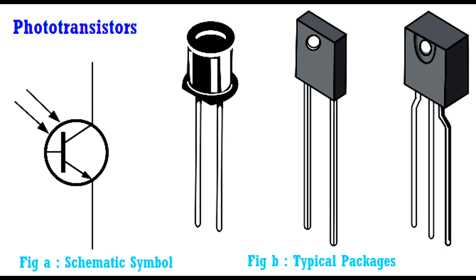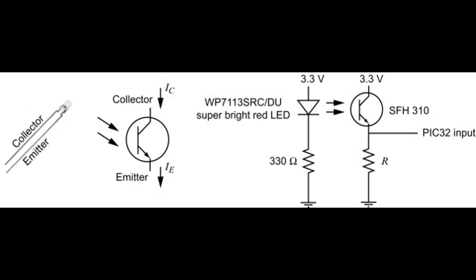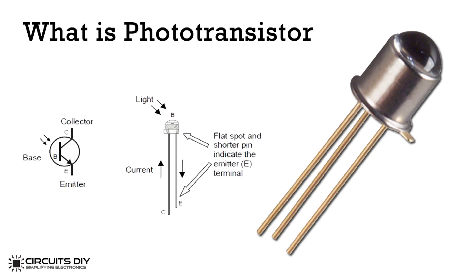Key points: The base region is exposed to light, which controls the phototransistor's operation. The small current generated by light in the base region is amplified by the transistor action, resulting in a larger current flow from the collector to the emitter. The packaging ensures the phototransistor is protected while allowing light to reach the sensitive area. The structure is designed to maximize sensitivity to light while maintaining transistor functionality, effectively converting light into an electrical signal.